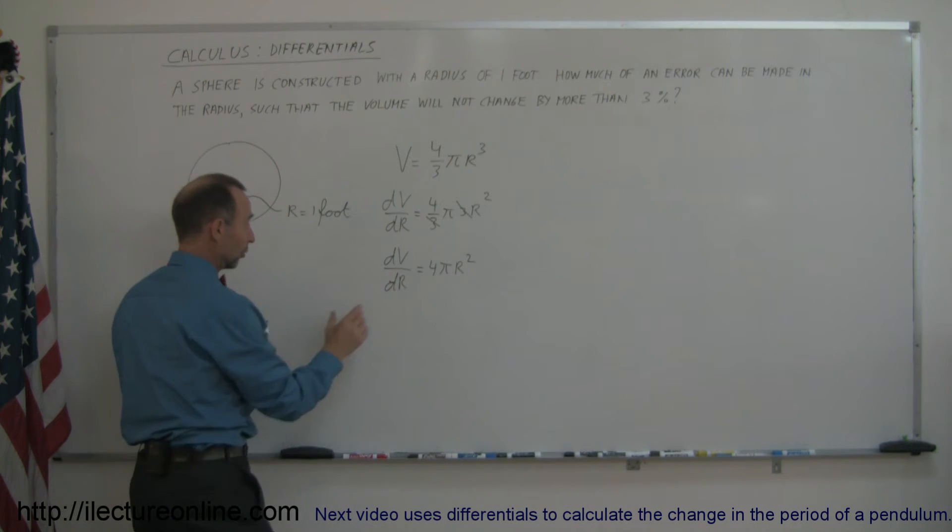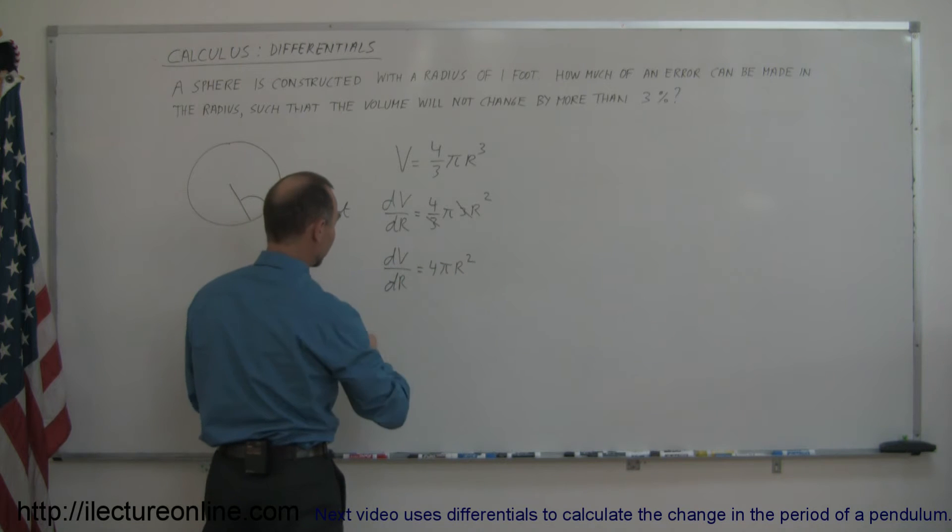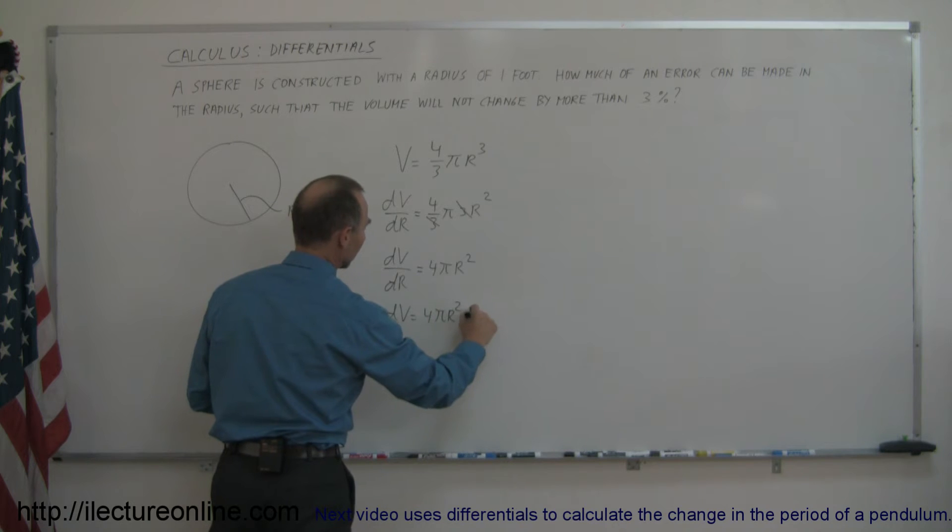Now separating the differential, so dv is a differential, dr is a differential, so dv is equal to 4 pi r squared dr.